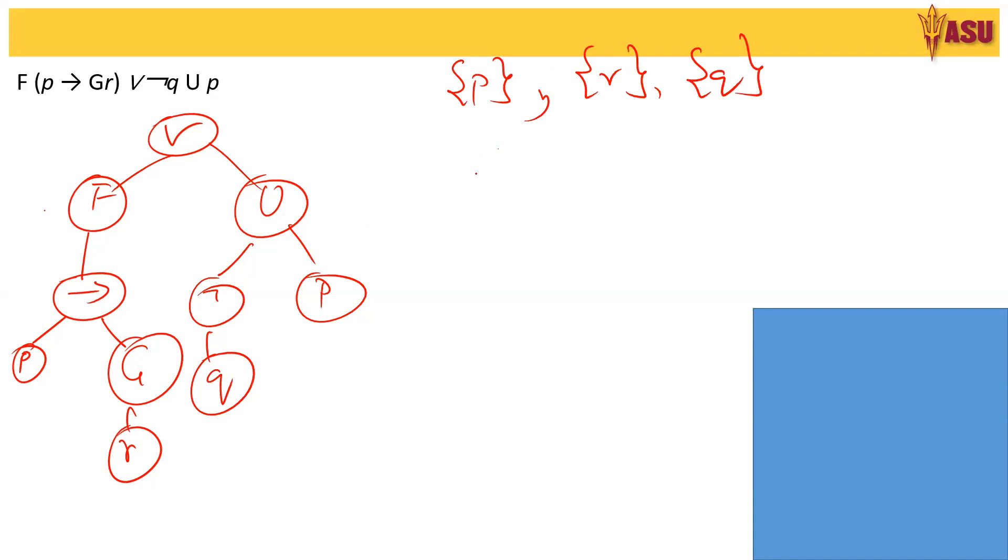Now from this we get the next set of sub-formulas which is G R. Also we have NOT Q. Going to the next set we have P implies G R, and NOT P U NOT Q, U P, and finally we have F, P implies G R. So these are the sub-formulas for this example.